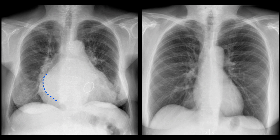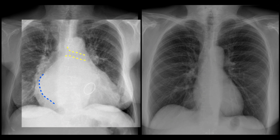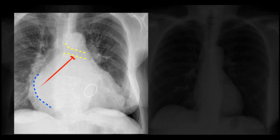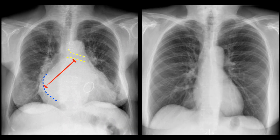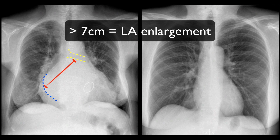If the double density sign is present, then the oblique left atrial measurement can be taken between the outer edge of the atrium to the midpoint of the left main bronchus. A distance of greater than 7cm confirms left atrial enlargement.